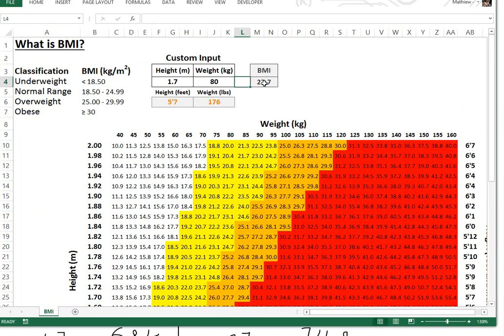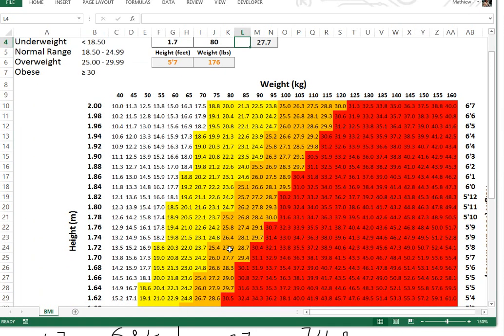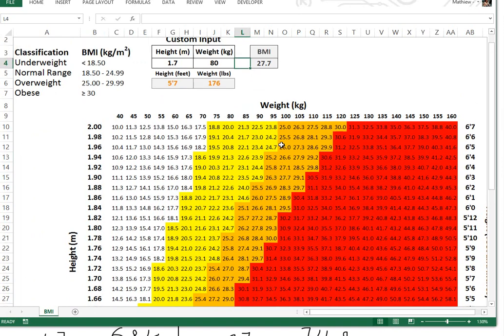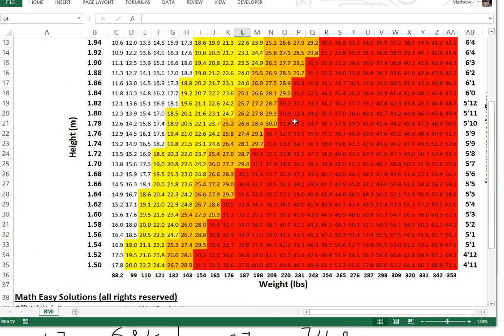there's five foot seven and it automatically converts. This one's just for metric, right? Except it just tells you what the weight is in pounds. So you go right here, you go 80, you got 27.7 and you can look in this graph where 27.7 is.